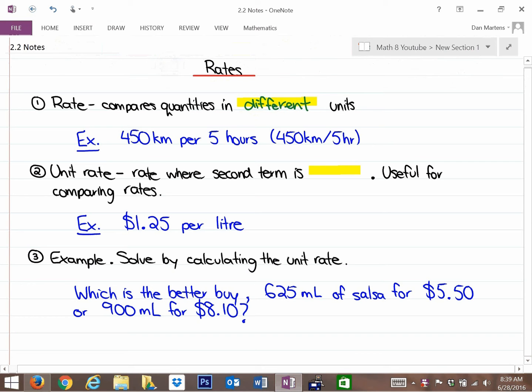An example here would be 450 kilometers per 5 hours, and you can write it with a slash as you can see here. That's 450 kilometers per 5 hours, and those are different units. Kilometers is a distance and hours is a time, so it's comparing things in different units.